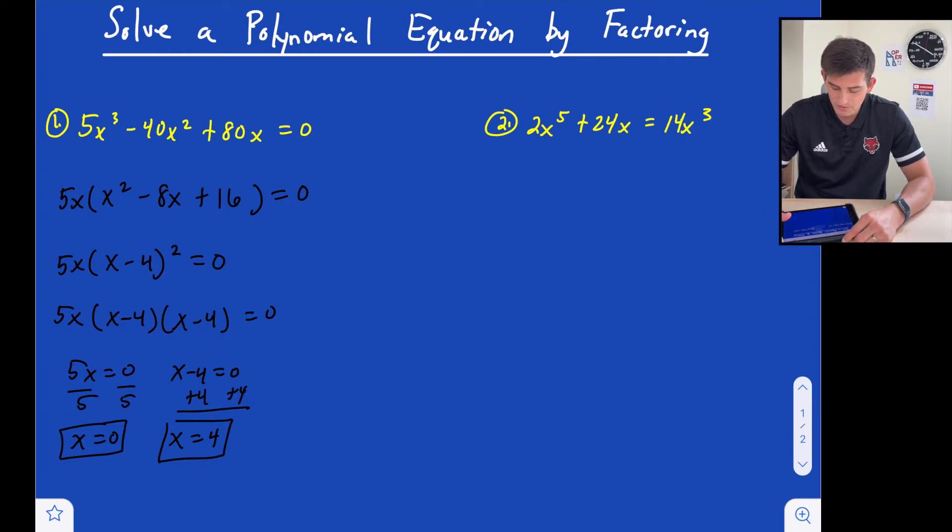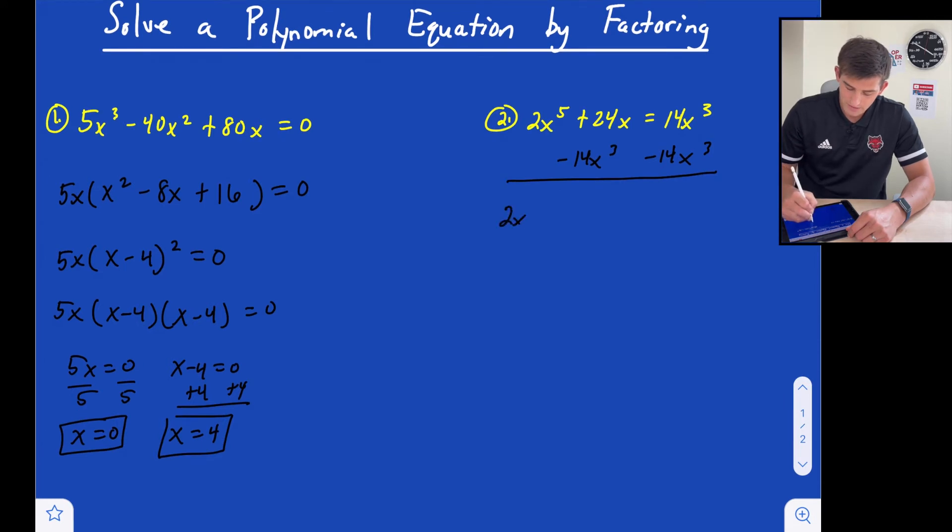All right. Example two, notice how we do not have this equal to zero. So essentially what we want to do is move our 14x cubed over to the left side by subtracting it so that it can be equal to zero. So now we have 2x to the fifth minus 14x cubed plus 24x is equal to zero. So now if we can just factor what's on the left then we're good to go.